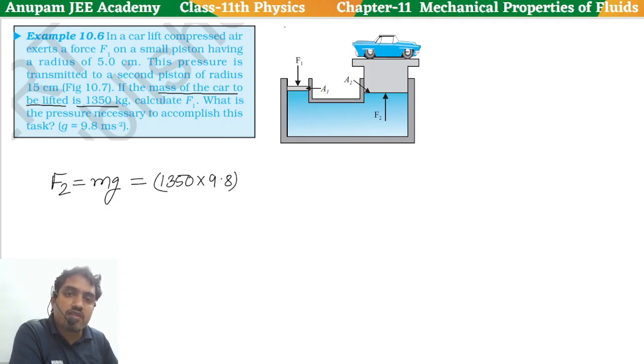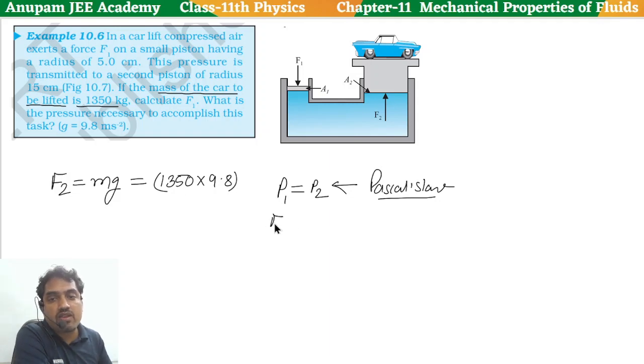Now we know that pressure will be equal according to Pascal's law. So P1 is equal to P2, that is Pascal's law. So here we have F1 by A1 is equal to F2 by A2.